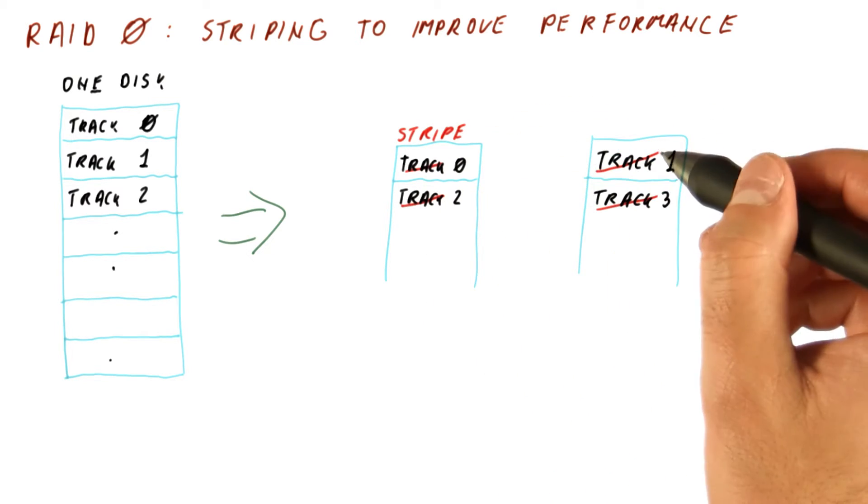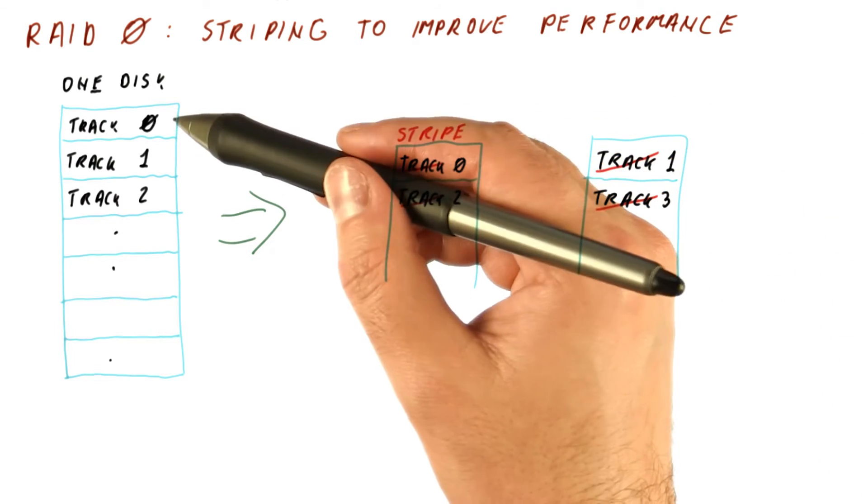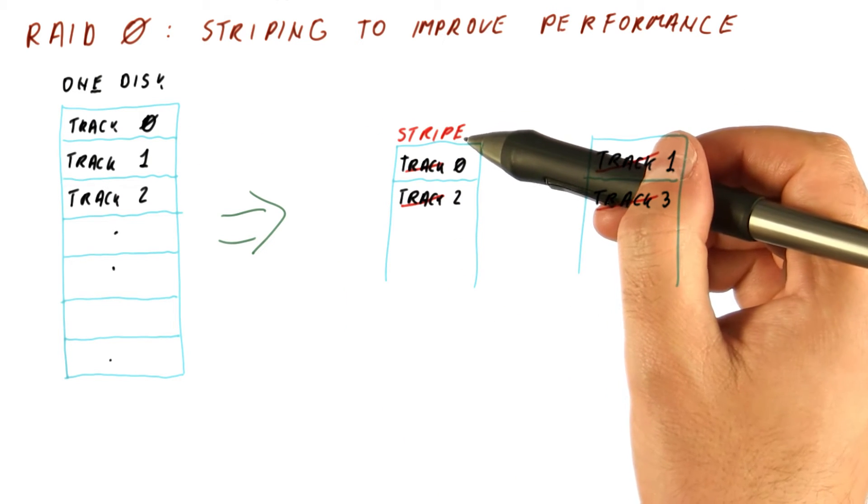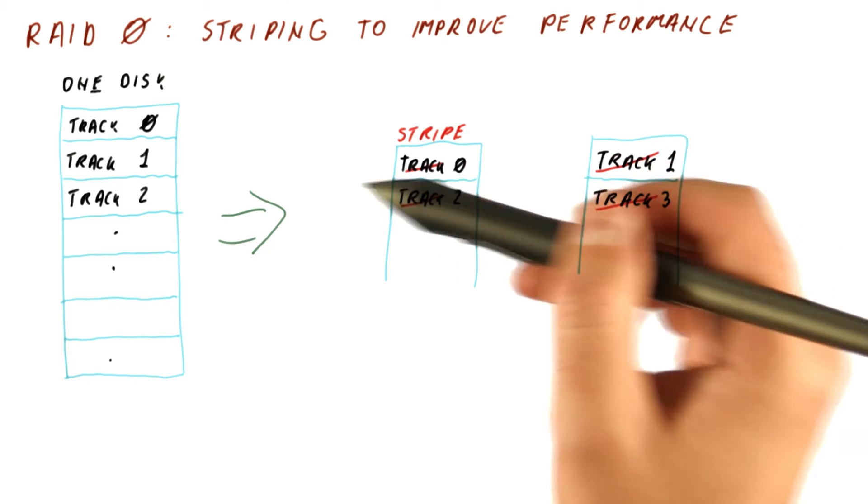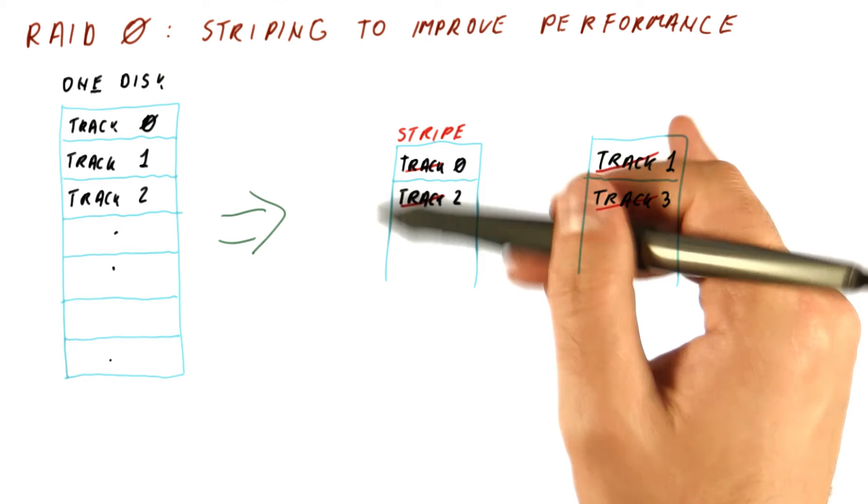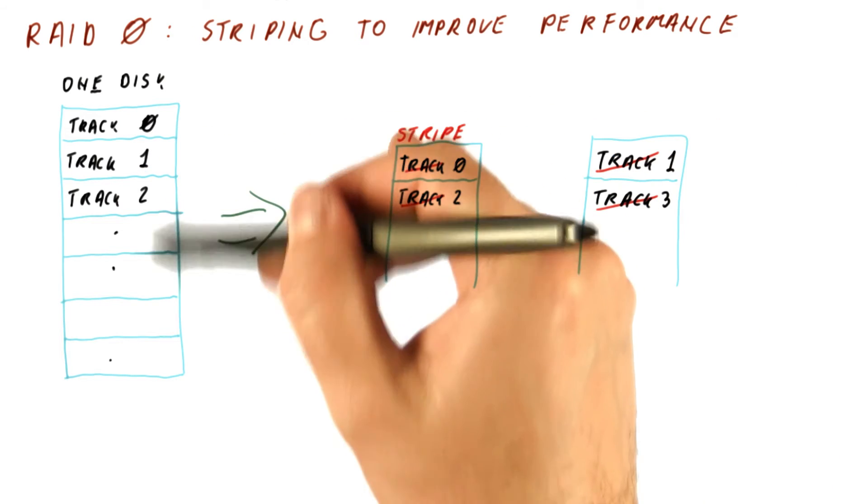...we call them stripes to avoid confusion between what's a track on a physical disk and these things that really are tracks that would belong to a fake disk that we don't really have, because these two disks are pretending to be this one disk.